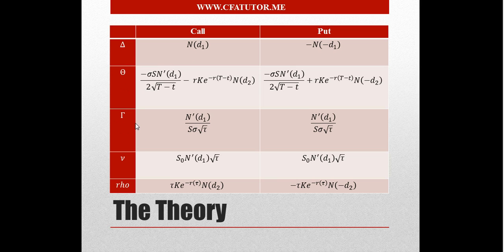Gamma is the sensitivity of the option price with relation to Delta — essentially the second derivative of the option price with respect to the stock price. This becomes important when dealing with large changes in spot prices, similar to how convexity works alongside duration. Vega is the sensitivity of the option price with relation to volatility.